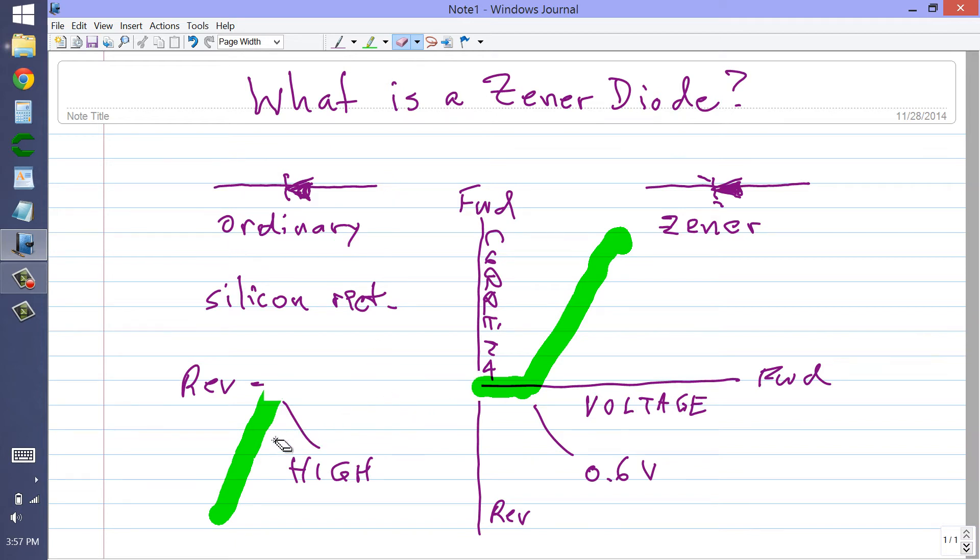Well now, let's just for a moment switch gears and consider the Zener diode. Notice the difference in the symbol. It looks just like an ordinary diode, except for these little twisties on the end of the cathode line there.